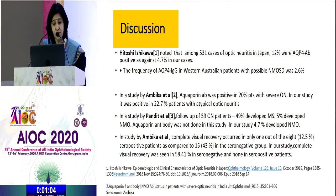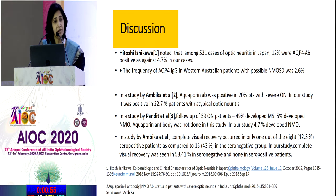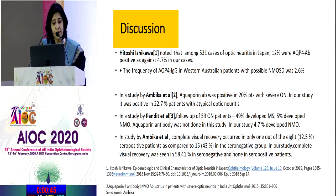A Japanese study on optic neuritis had 12% seropositivity compared to 4.7% in our cases. An Australian study put the seropositivity rate at 2.6%, so we are somewhere between the Japanese and the Western data. In a study by Ambika et al., aquaporin-4 antibody was positive in 22.20% of patients with severe optic neuritis, something similar to our study. In a study by Pandit et al., 5% of patients developed NMO, and in our study 4.7% developed NMO, but they had not done this seropositivity test.